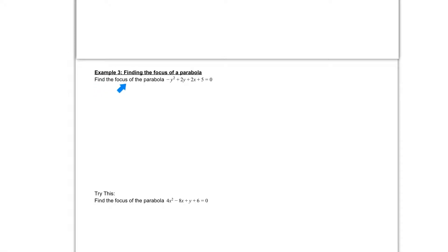Example 3 asks us to find the focus of the parabola, negative y squared plus 2y plus 2x plus 5 equal to 0. In order to find the focus, we need to know what that formula is. So we're going to go back to the very first page real quick and take a look at our formulas.